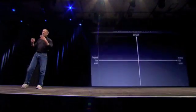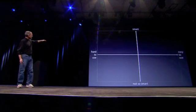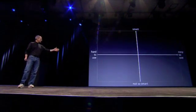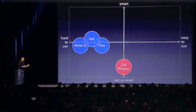The problem is that phones are not so smart and not so easy to use. If you make a business school 101 graph of the smart axis and the easy-to-use axis, regular cell phones are right there — not so smart and not so easy to use. Smartphones are definitely a little smarter, but they're actually harder to use. They're really complicated. Just for the basic stuff, people have a hard time figuring out how to use them.